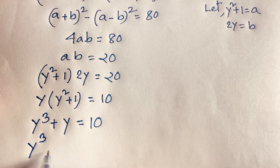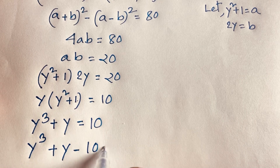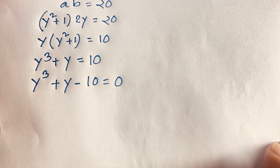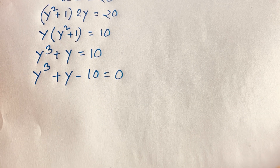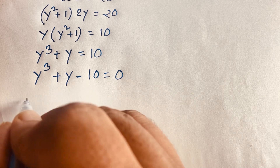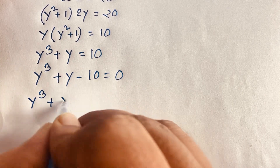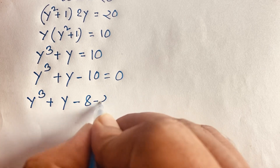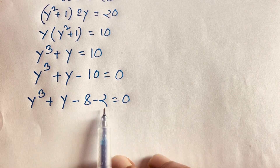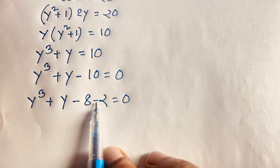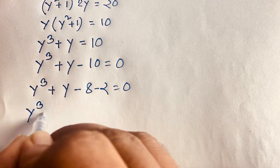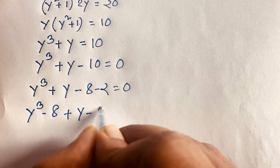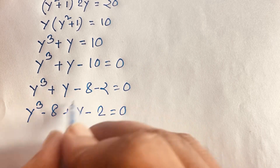So we have y³ + y − 10 = 0. To factor this, I split −10 as −8 − 2, giving y³ − 8 + y − 2 = 0. Rearranging, this is (y³ − 8) + (y − 2) = 0.